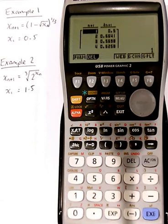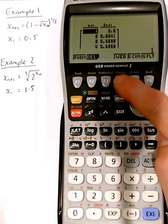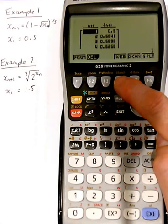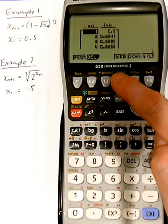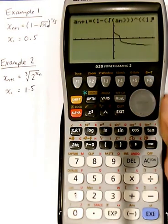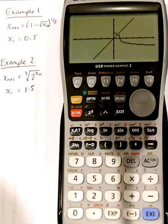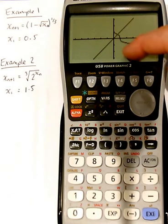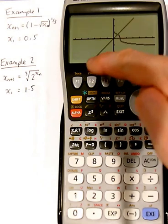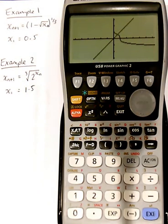We can go back to the table here, and then at the bottom we've got web. Now, web means either a cobweb or a staircase diagram. So you press this one here. And I just have some standard view window options at the moment. So we can see that we've got the original graph, the curve, and we've got y equals x. Now, every time we press execute,